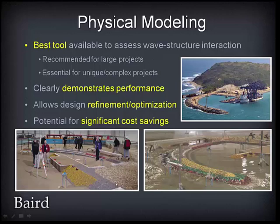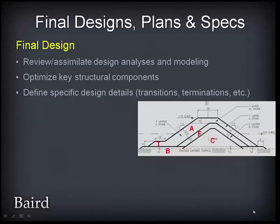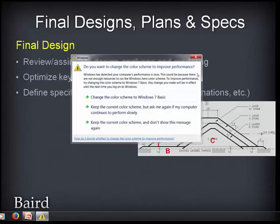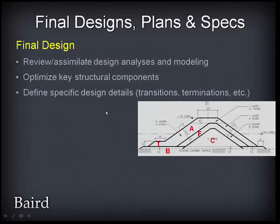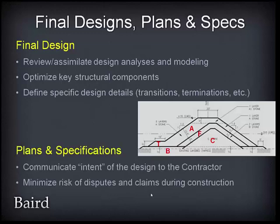These photos show a 1:50 scale physical model of a port designed and built in Madagascar — the rubble mound breakwater is about 600 metres long — and a picture of the completed breakwater with a ship unloader at the site. The final design phase involves review and assimilation of all design analysis and modelling: site investigations, wave climate studies, and physical modelling. This step also includes optimization of key structural components and identification of specific design details such as transitions and terminations between cross sections, leading to plans and specifications whose purpose is to communicate the intent of the design to the contractor and minimise the risk of disputes and claims during construction.